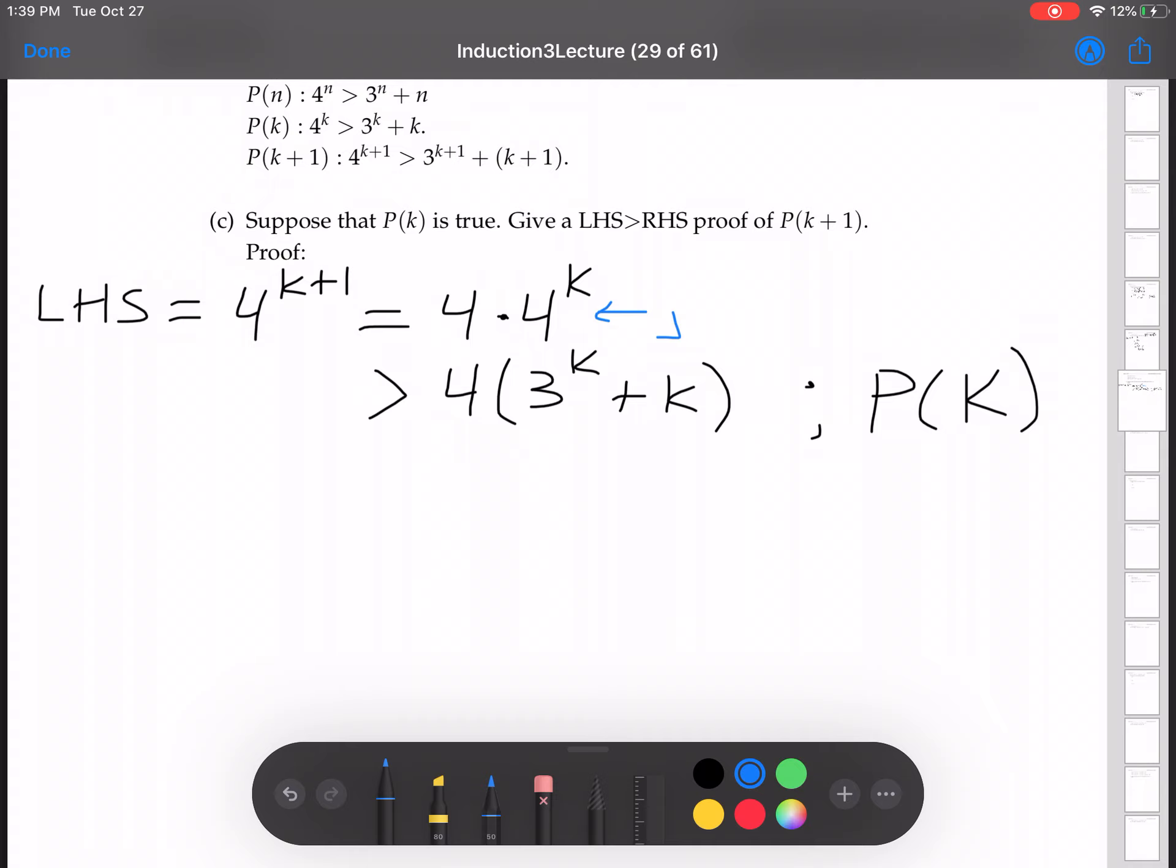This is greater than 4 times (3 to the k plus k). This is my inductive hypothesis. This is P of k. Notice how I use P of k there. P of k tells me that this 4 to the k is bigger than that. That's exactly what I did, exactly what I used right there. I just multiplied both sides. This tells you that 4 times 4 to the k is bigger than 4 times (3 to the k plus k).